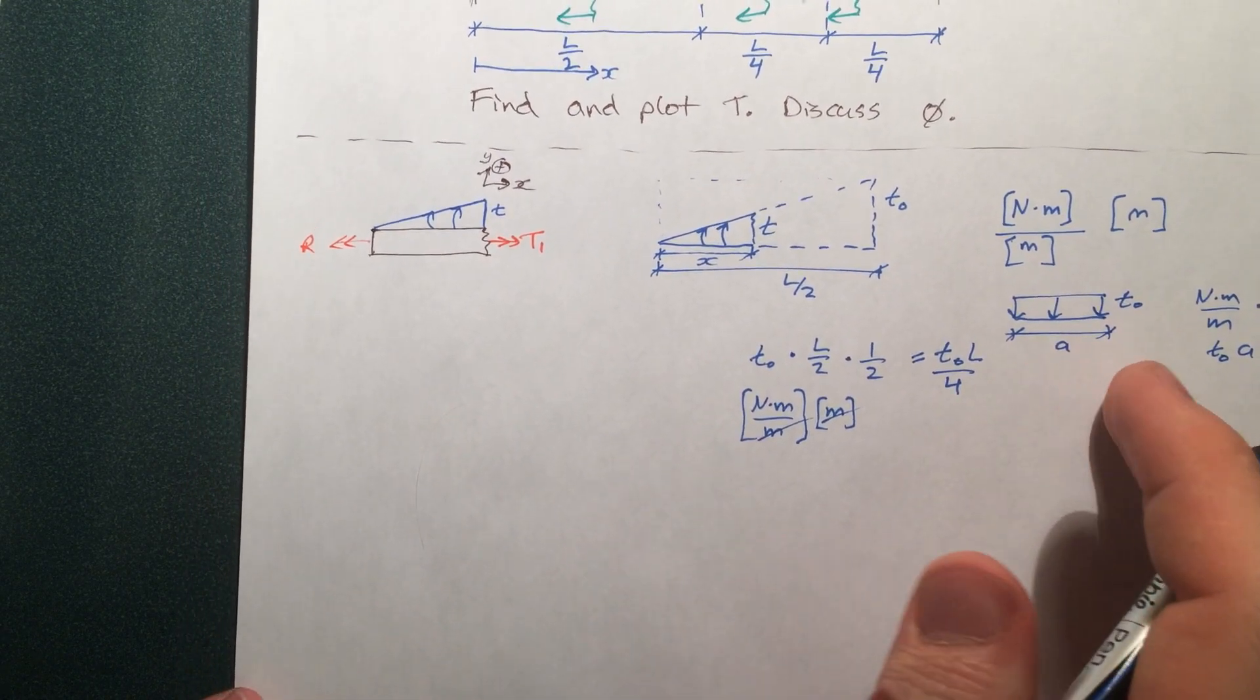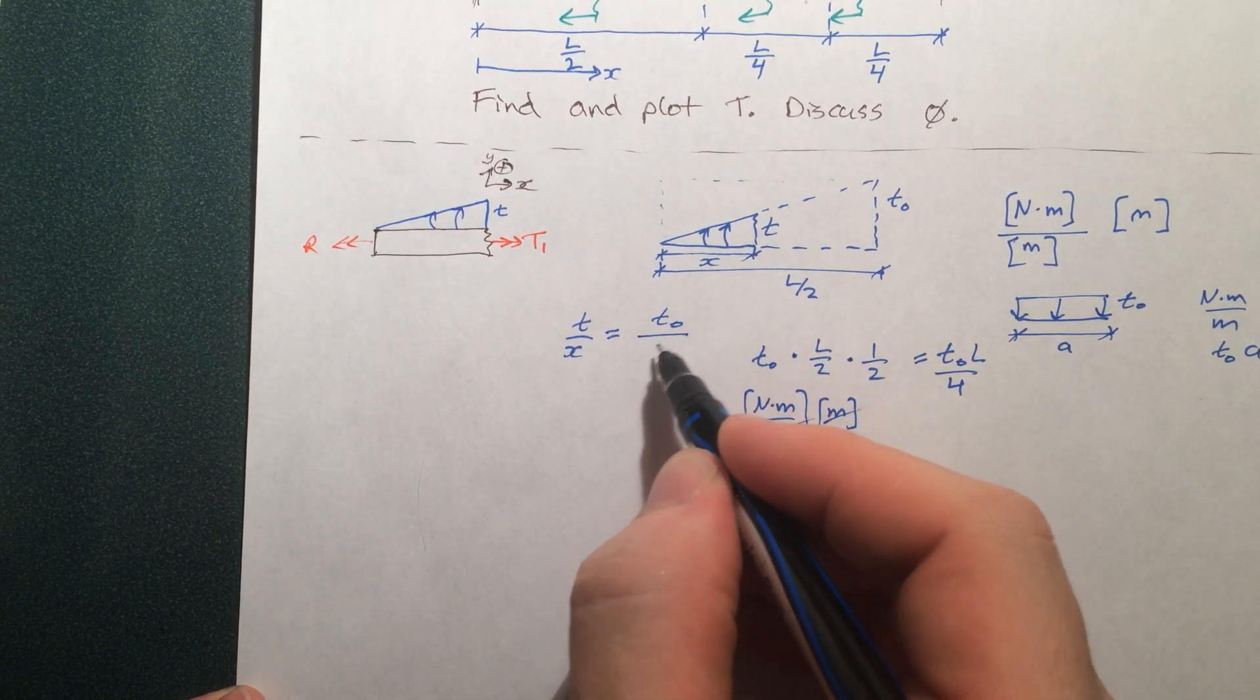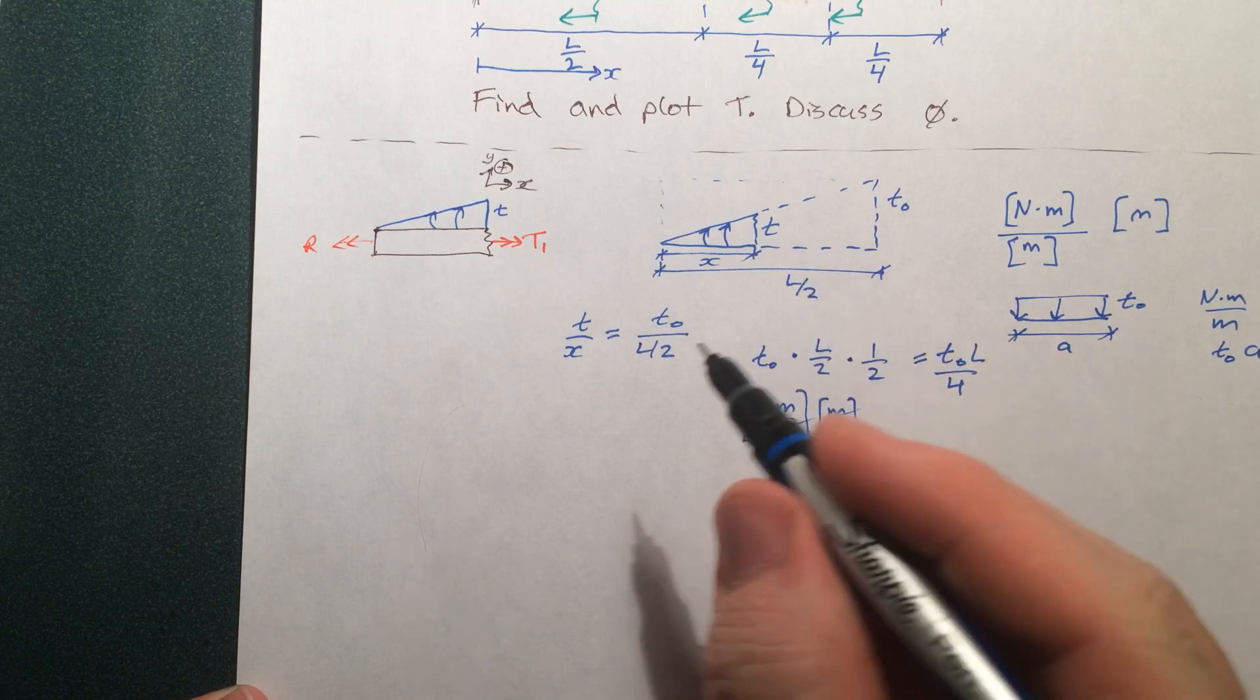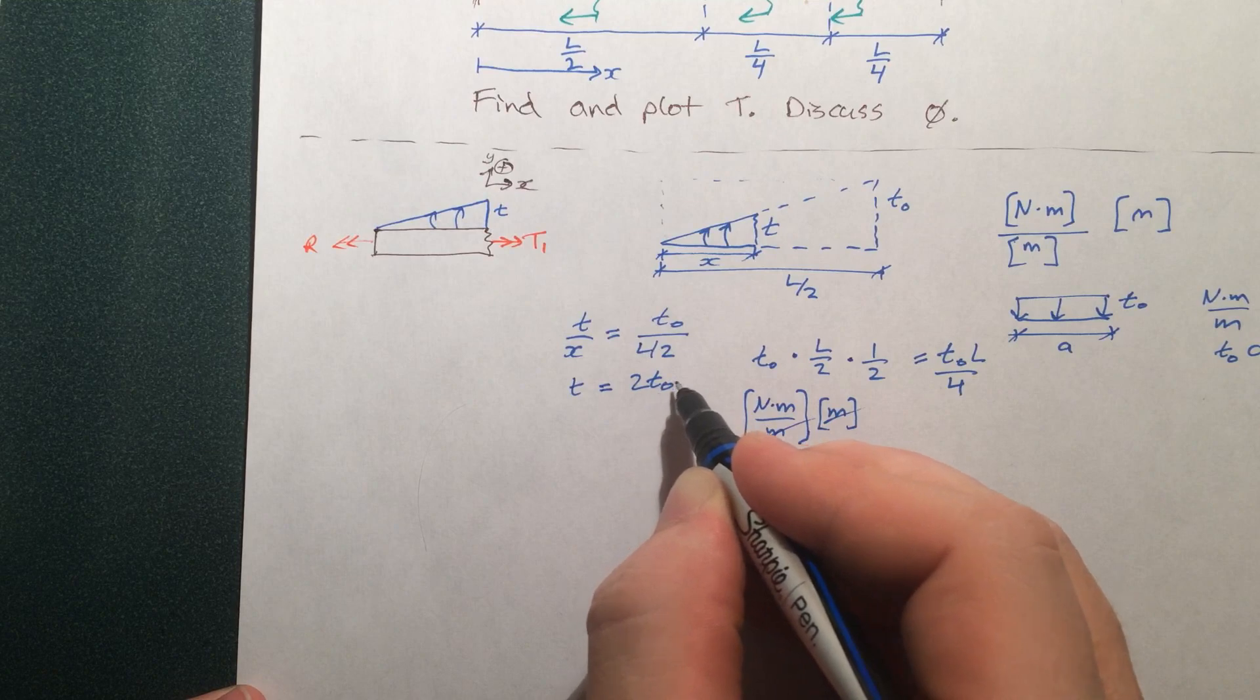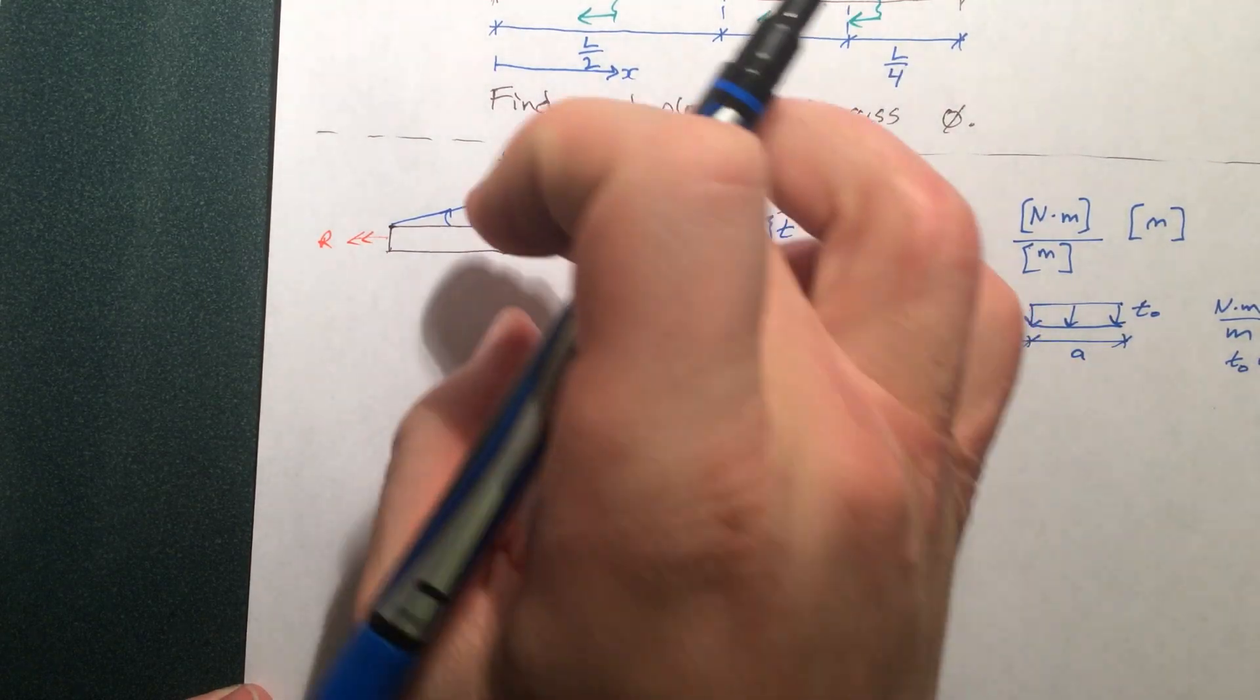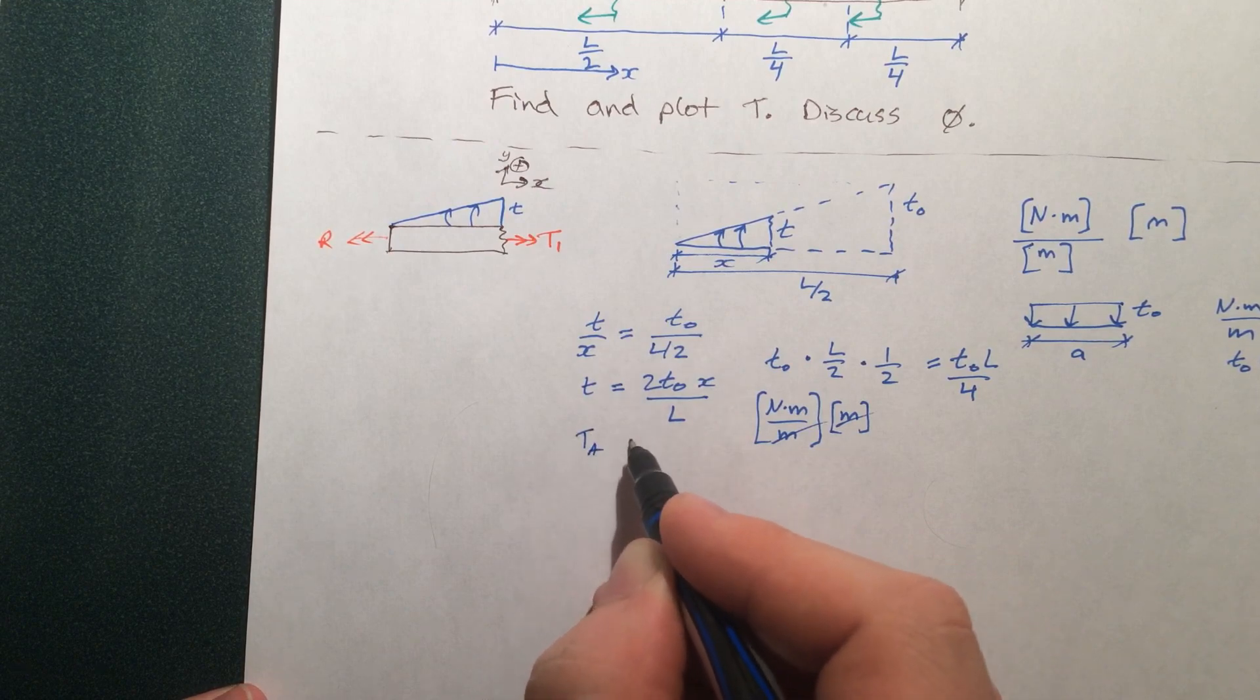And we can relate those by similar triangles. We can say T by X is equal to T-naught by L by 2, or we can say T is equal to 2 T-naught X by L. Or, the total torque delivered by this piece is that, times its length, which is X, divided by 2. So the total torque delivered by that length is T-naught X squared over L.